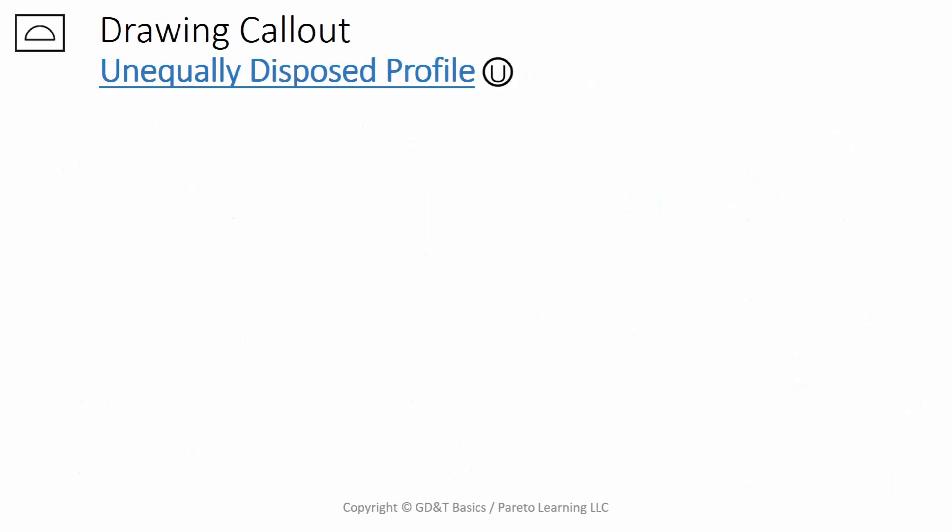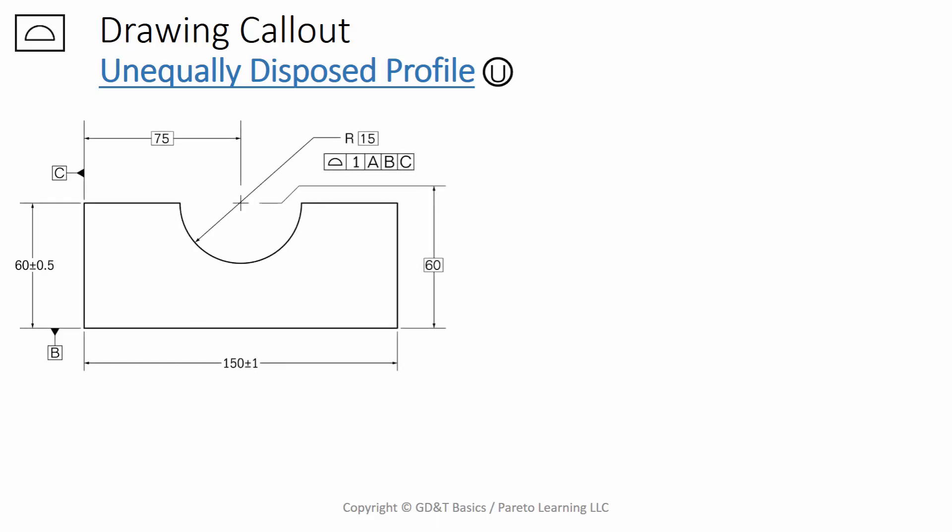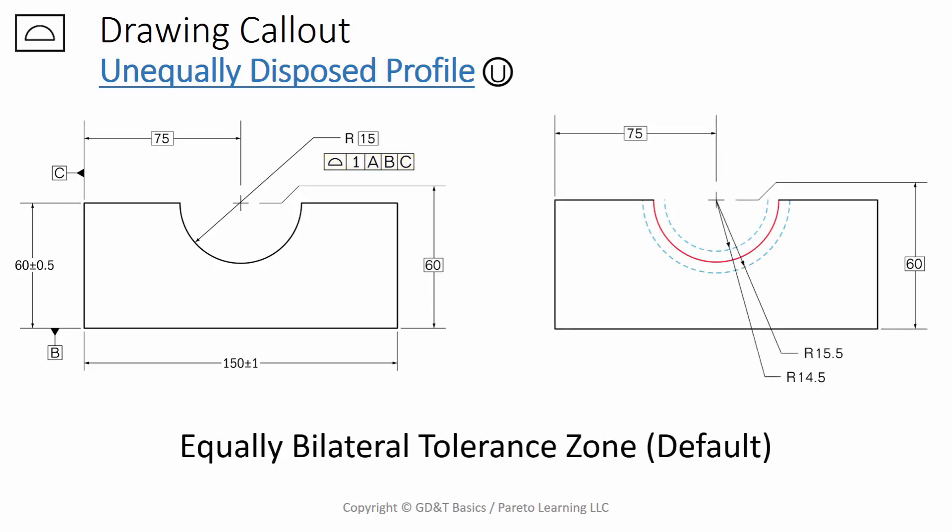You can distribute your profile in a few different ways. We've already talked about the default method, which is when you do not use the U symbol. This is known as an equally bilateral tolerance zone, and it just means that the profile is set equally about the true profile. Your tolerance zone in blue is set perfectly equal around the true profile in red.